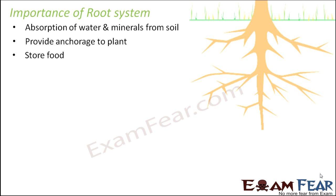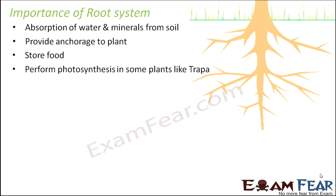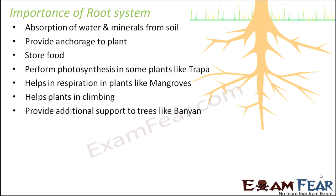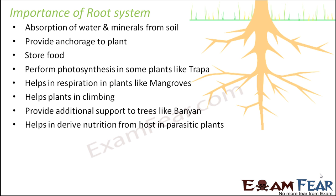Roots provide anchorage to the plant and store food — in some plants the tap roots become swollen to store food, while in other plants the adventitious roots are swollen. Roots perform photosynthesis in some plants like Trappa where the roots contain chlorophyll. They help in respiration in plants like mangroves where roots have specialized structures called pneumatophores with lenticels which help in exchange of gases. They help plants in climbing, for example the climbers. They provide additional support to trees like the banyan tree with its prop roots. And haustorial roots help in deriving nutrition from a host in parasitic plants. These are some of the important functions which roots perform, and that is why roots have a significant role to play in the life of a plant.